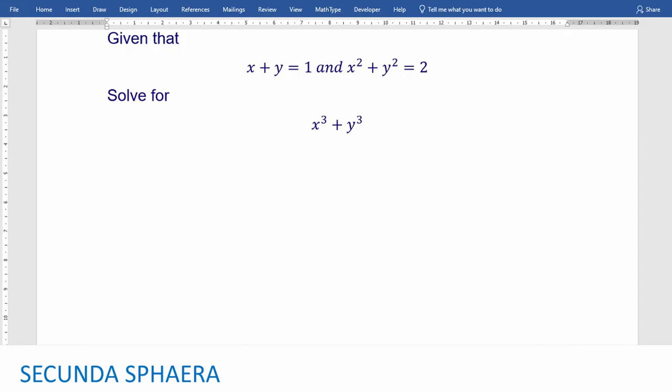We are given the next exercise where we know that x plus y equals 1 and x squared plus y squared equals 2, and we are being asked to get the value of x cubed plus y cubed. Now, this exercise is a little bit tricky. It is a system of equations with two unknowns. However, they aren't linear.